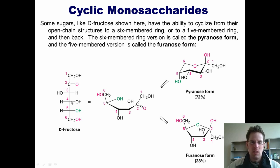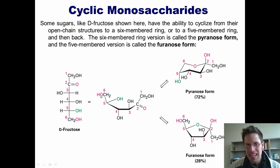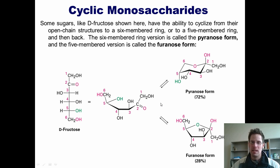For D-fructose, if the green OH closes on the anomeric carbon — carbon 2 — fructose is a little different from glucose because it's a ketose; it's got a ketone instead of an aldehyde. This green OH closes on the carbonyl carbon and forms a five-membered ring, the furanose ring. If instead the pink OH dangling off of carbon 6 closes, that actually forms a six-membered ring, the pyranose ring. So D-fructose exists going back and forth between both of these two ring structures, with the open-chain form existing transiently as an intermediate between the two.